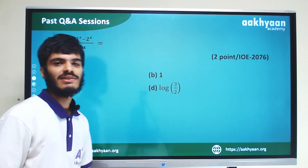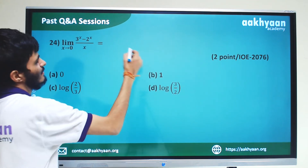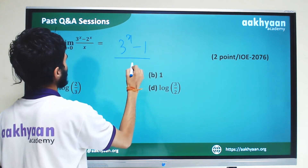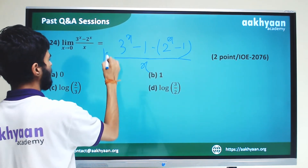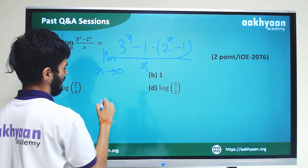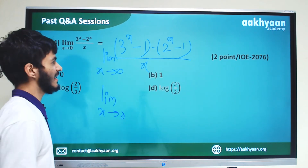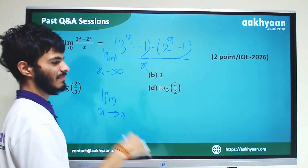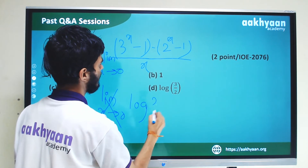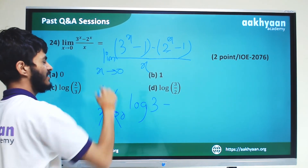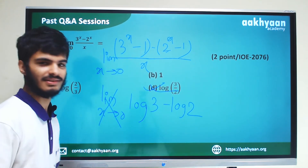In the 24th number equation, we have 3 to the power x minus 2 to the power x by x, limit x tends to 0. We write it as 3 to the power x minus 1 by x, minus 2 to the power x minus 1 by x. Using the standard limit, this gives log 3 minus log 2, which equals log 3 by 2.